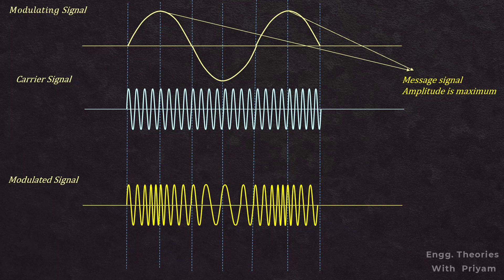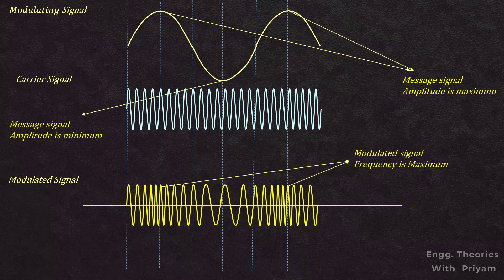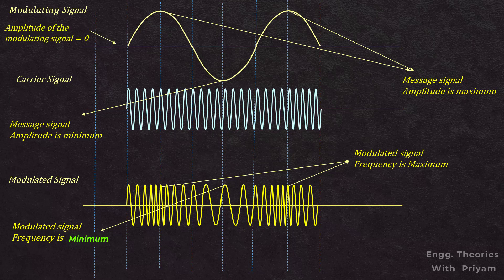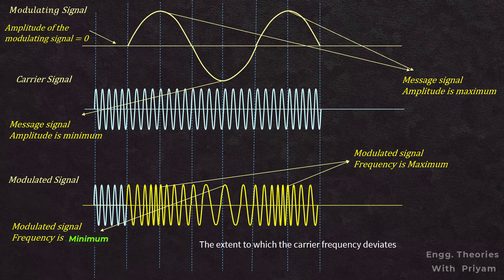Conversely, when the modulating signal decreases, the frequency continues to decrease. When the modulating signal m(t) reaches its positive peak value, the frequency of the FM signal hits its maximum. Conversely, when m(t) reaches its negative peak value, the frequency drops to its minimum. If the amplitude is equal to zero, there is no variation in the frequency of the FM signal. The extent to which the carrier frequency deviates from its unmodulated value is known as the frequency deviation.